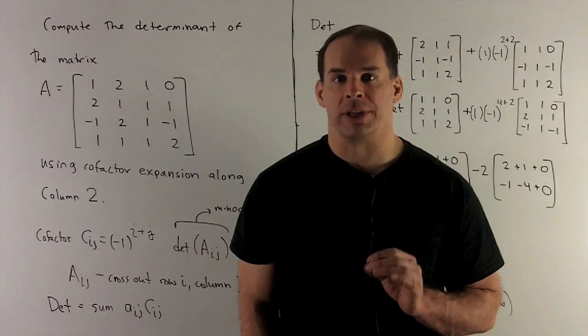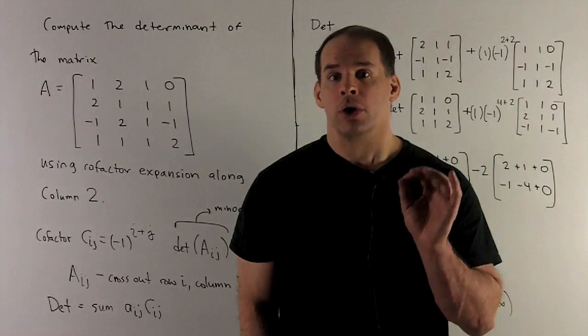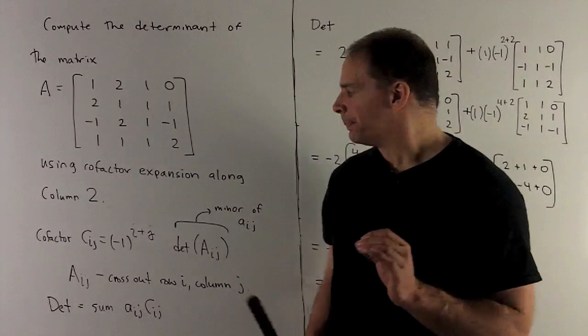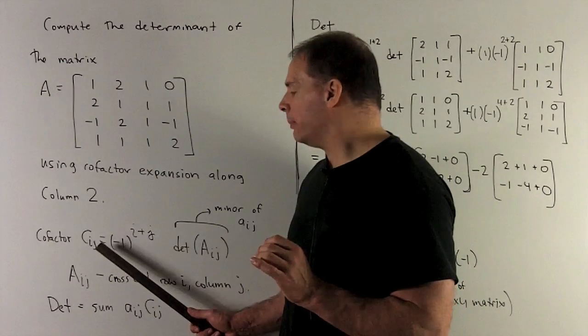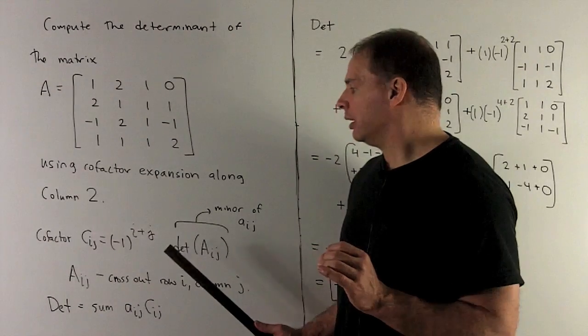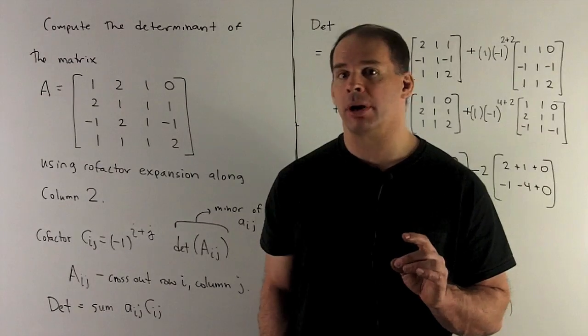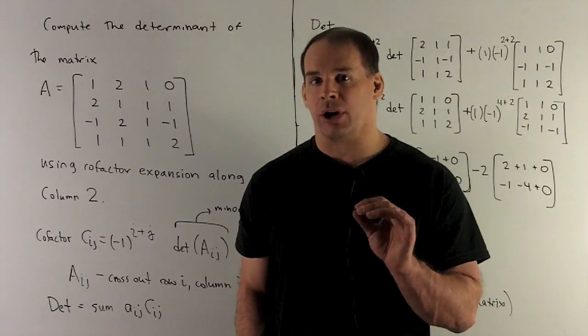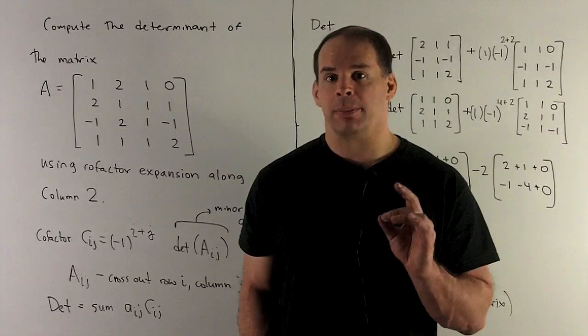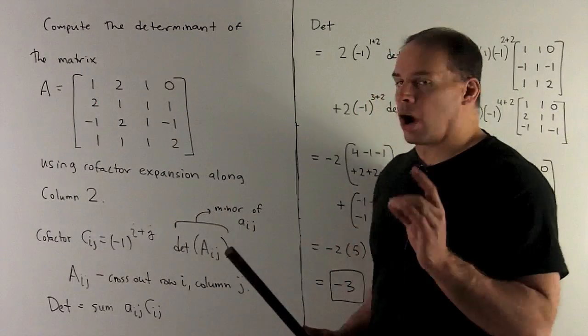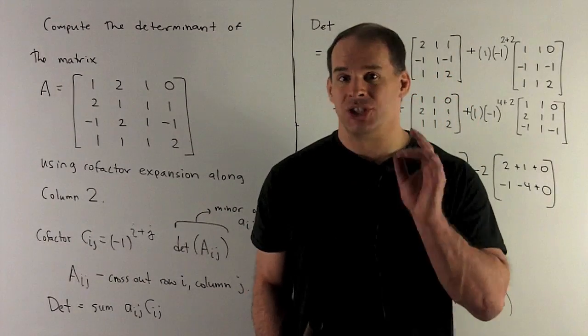Now, start off with a definition. So, cofactors. The cofactor for the ijth entry - row i, jth column. We take minus 1 to the i plus j. So, we add row number plus column number. Then we multiply by the minor for ij. So that's going to be, we take the determinant of the matrix where I cross out the ith row, jth column.